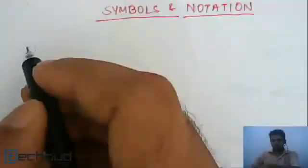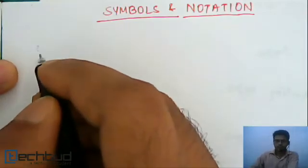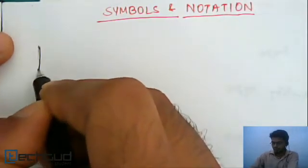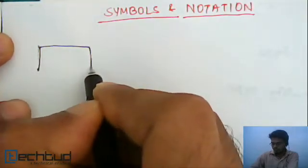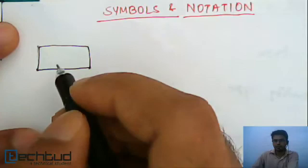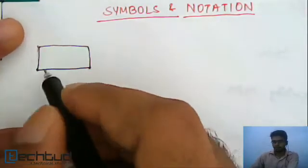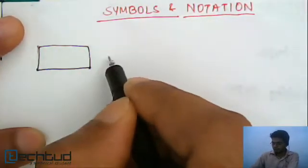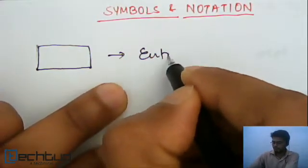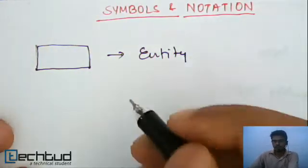The first thing we understood in this chapter was entity. So, what is entity? Well, the basic object having independent existence. Okay. So, we represent entity from this rectangle. Entity. Okay.